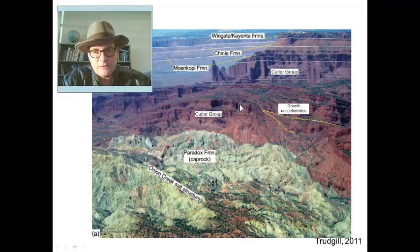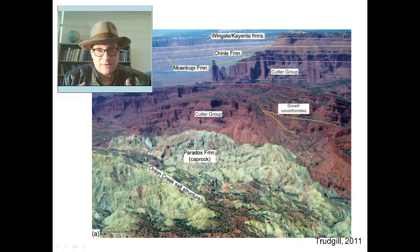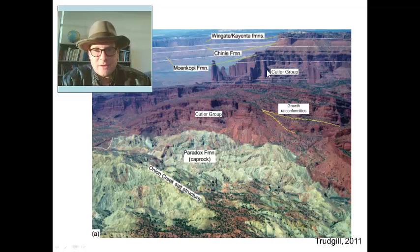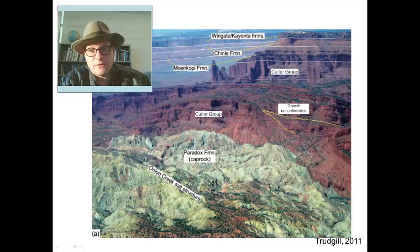Even during the Permian period, this uplifted area was not receiving as much sedimentation as surrounding areas, as the salt was being pushed up. You can see the Cutler Group going all the way up, the Moenkopi, the Chinle, the Wingate, and the Kayenta formations, with some of the Jurassic units visible off in the distance.